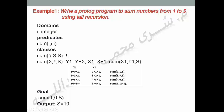الـ global parameter المستخدم في هذا البرنامج هو من نوع integer ويتم تعريفه داخل الـ domains بالشكل: I = integer. داخل الـ predicates يتم تعريف الرول المستخدمة sum مع three arguments كلها من نوع integer. داخل الـ goal يتم كتابة sum بين أقواص دائرية، يتم التعويض عن X Capital بالقيمة الابتدائية 1، وعن Y Capital بالقيمة الابتدائية 0، وتحديد المتغير S Capital المطلوب إيجاد قيمته.